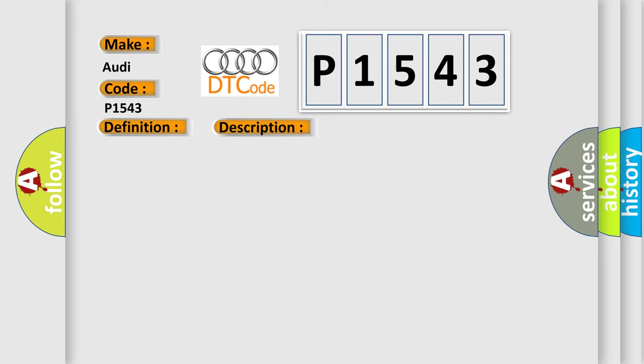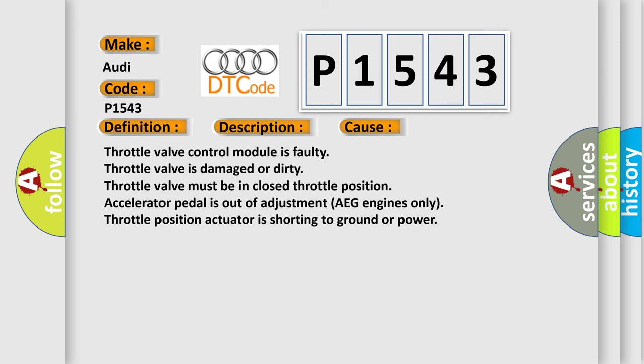This diagnostic error occurs most often in these cases: The throttle valve control module is faulty. The throttle valve is damaged or dirty. The throttle valve must be in the closed throttle position. The accelerator pedal is out of adjustment. For AGM and AEG engines only: the throttle position actuator is shorting to ground or power.